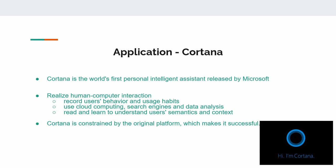Cortana is the world's first personal intelligence system released by Microsoft. It can understand users' preferences and habits, and help users arrange their schedules and answer questions. What Microsoft wants to achieve is that the intelligent interaction between mobile phone users and Cortana is not simply based on stored Q&A, but dialogue. It will record users' behavior and usage habits using cloud computing, search engines, and unstructured data analysis — reading and learning from text files, emails, pictures, videos, and other data in mobile phones — to understand users' semantics and context so as to realize human-computer interaction.